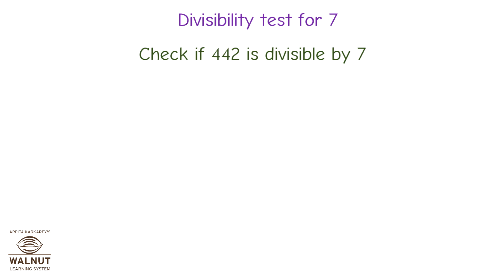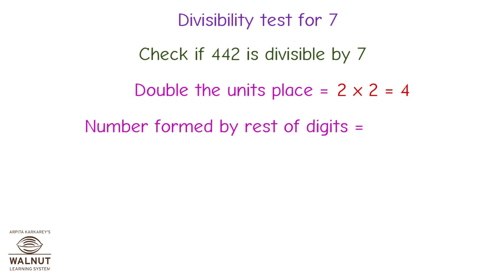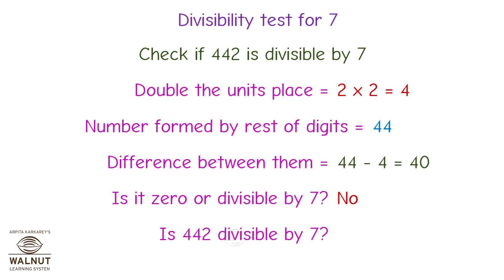Check if 442 is divisible by 7. Double the units place: 2 multiplied by 2 is equal to 4. Number formed by the rest of the digits is equal to 44. Difference between them is equal to 44 minus 4, which is equal to 40. Is it 0 or divisible by 7? No! Therefore, is 442 divisible by 7? No!